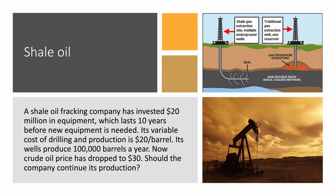The second case is on Shell Oil. A few years ago, when oil prices tanked, news reports said the cost of oil is $40 and the price of oil has dropped to $30, putting Shell Oil in huge trouble. Is this true? A Shell Oil fracking company has invested $20 million in equipment, which lasts 10 years before new equipment is needed. Its variable cost of drilling and production is $20 per barrel. Its wells produce 100,000 barrels a year. Crude oil price has dropped to $30 — should the company continue its production?